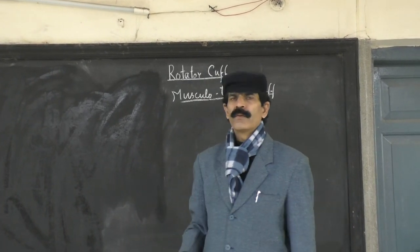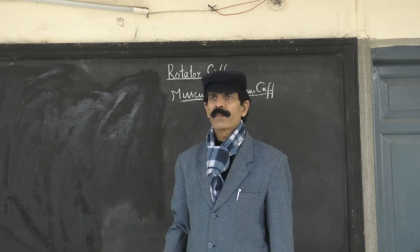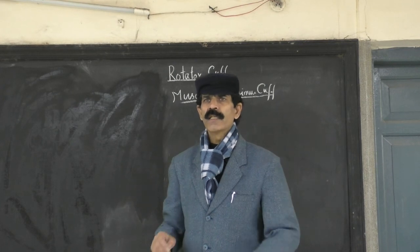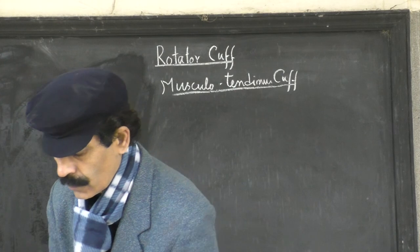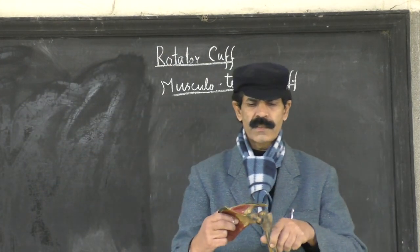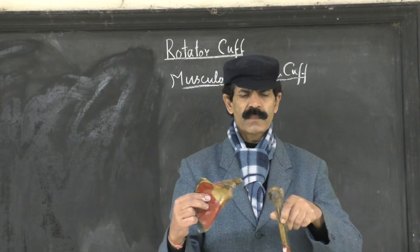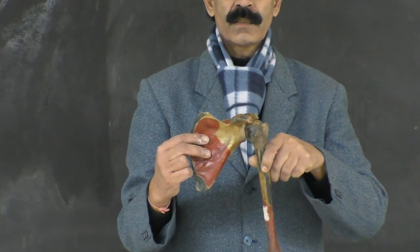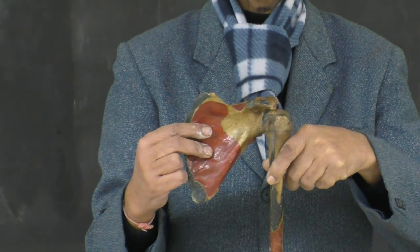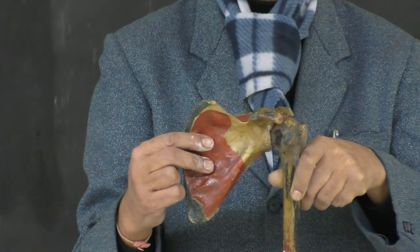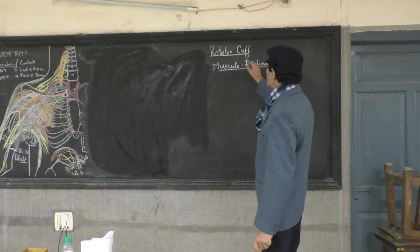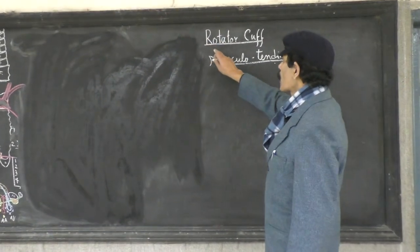As the name suggests, the rotator cuff is present in the upper part of the arm and is concerned with the rotation of the humerus. As the humerus rotates in the shoulder joint, the rotational movements include medial rotation and lateral rotation. This is why it is called the Rotator Cuff, which is concerned with the rotation of the arm and the humerus.